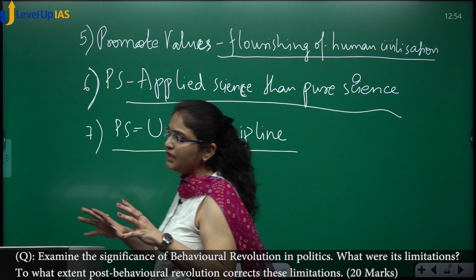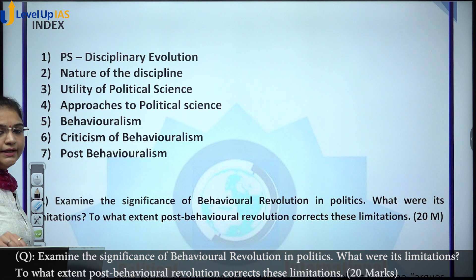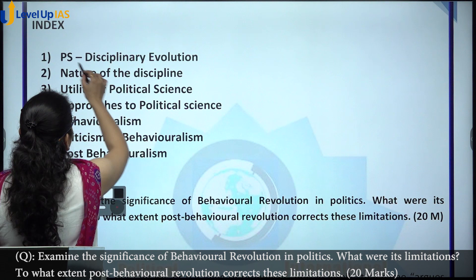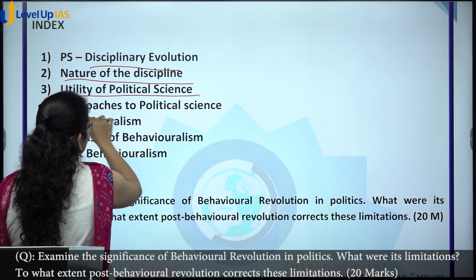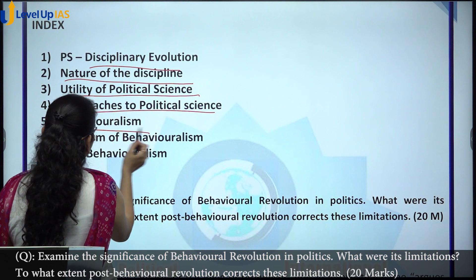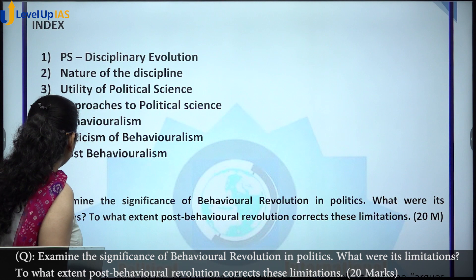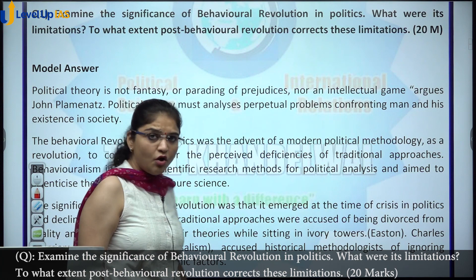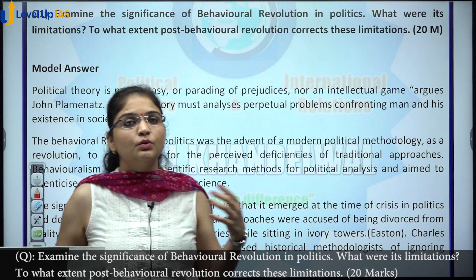This is a brief view of the traditional approaches, the evolution of the discipline, its nature, the utility of the subject, modern and traditional approaches, behavioralism and its critique, and post-behavioralism — why it was introduced and whether it has served the purpose it was designed for. I have given a comprehensive answer, but you need to tailor it to a 20-mark format because students are weak in this chapter and lack clarity.